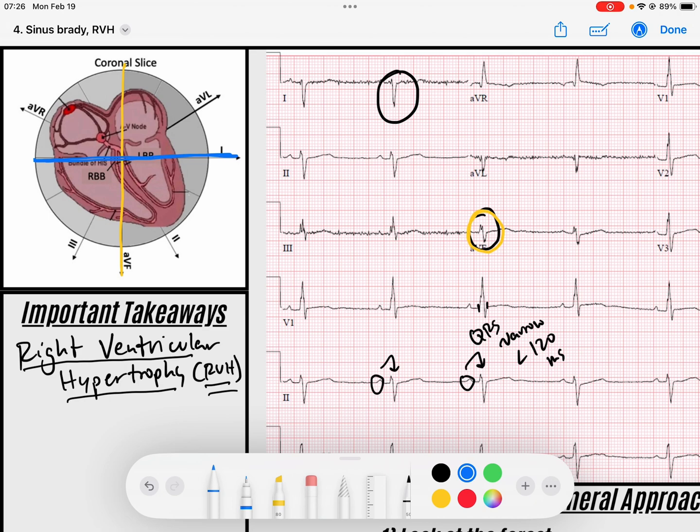If AVF is up and down and we have an isoelectric AVF, that means my signal is going perpendicular - isoelectric means perpendicular. My signal is going perpendicular to AVF along this axis. But we need to determine which way it's going. It's going negatively in lead one, so it's going this direction. That means my axis is like 180 degrees. We definitely have right axis deviation.